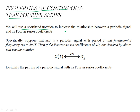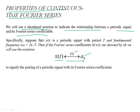We'll use a shorthand notation to indicate the relationship between the periodic signal and the Fourier series coefficient. Specifically, if x(t) is a periodic signal, then its Fourier series expansion we are going to indicate by a double-sided arrow, which implies that if you have a periodic signal it can be expanded in terms of Fourier series, so it has Fourier coefficients a_k, where a_k is the strength of the k-th harmonic in the series expansion.